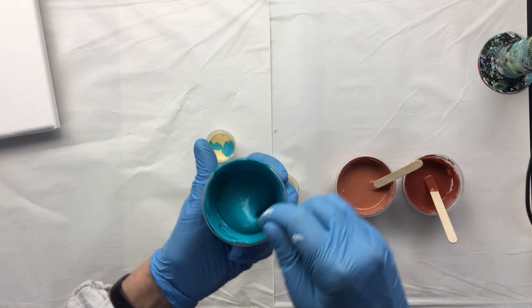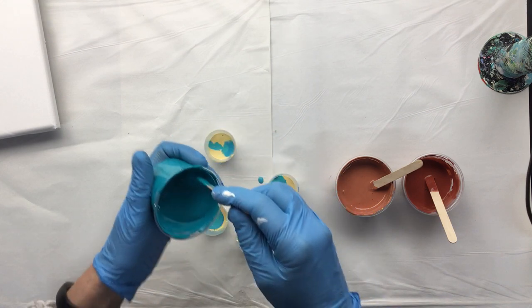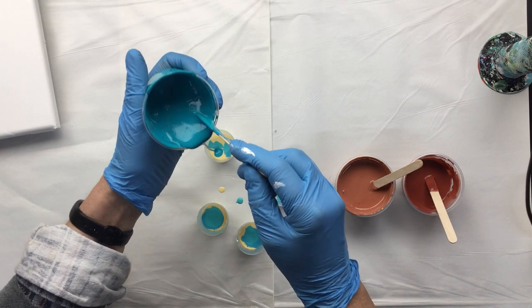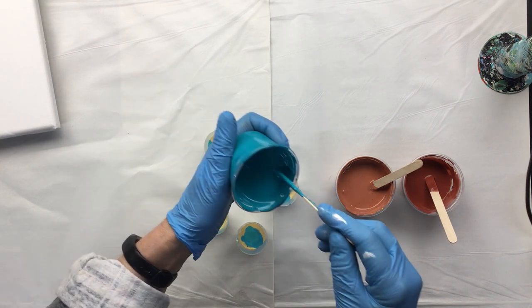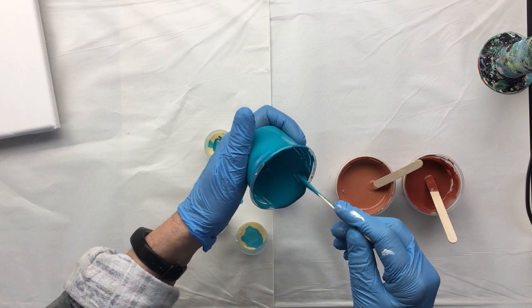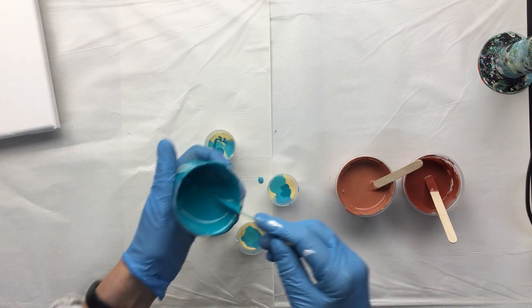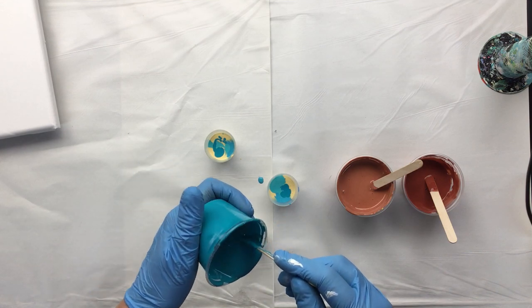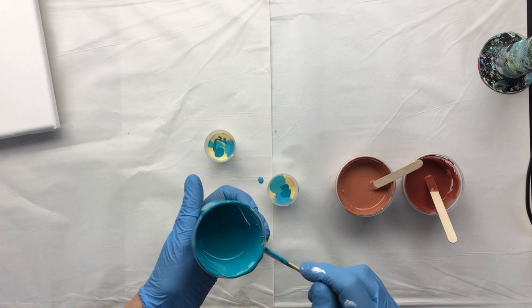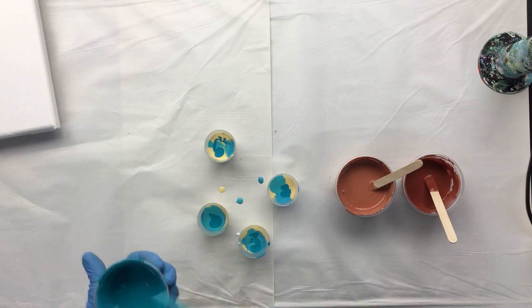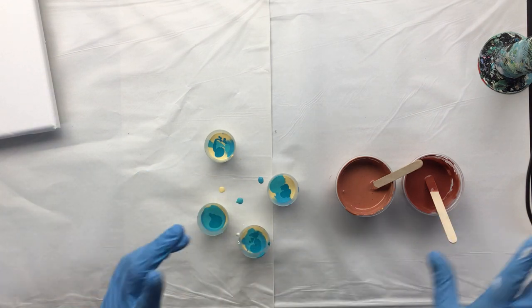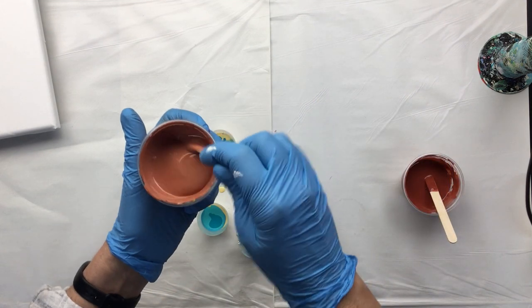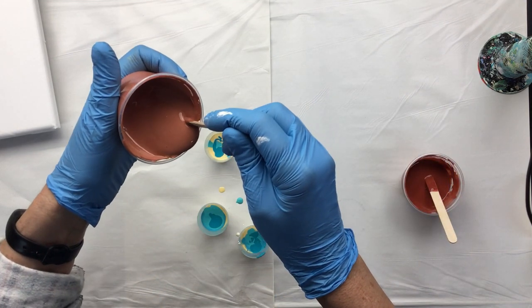Then I have the darker turquoise. This is a really nice dark turquoise, it has a little bit more green in it to make it just a little bit different color which I like. Not too much of that.